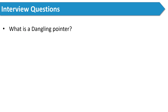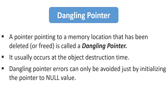The interviewer then asked: what is a dangling pointer? You should know the definition of all four major pointers. A dangling pointer is a pointer pointing to a memory location that has been deleted or freed. It usually occurs at the time of object destruction, and a dangling pointer error can only be avoided by initializing the pointer to a null value.